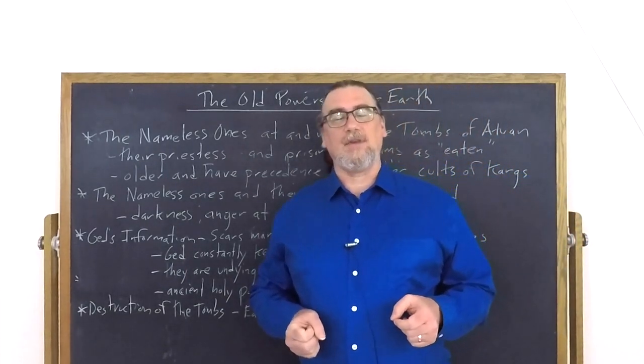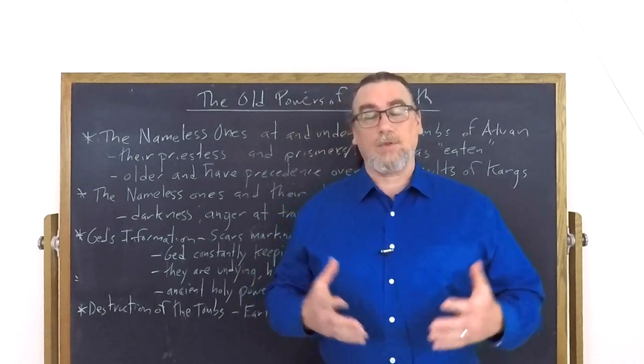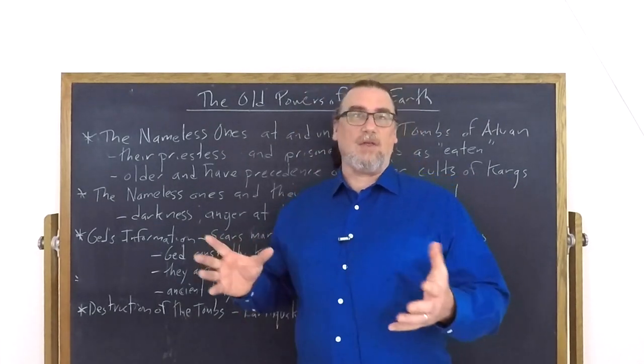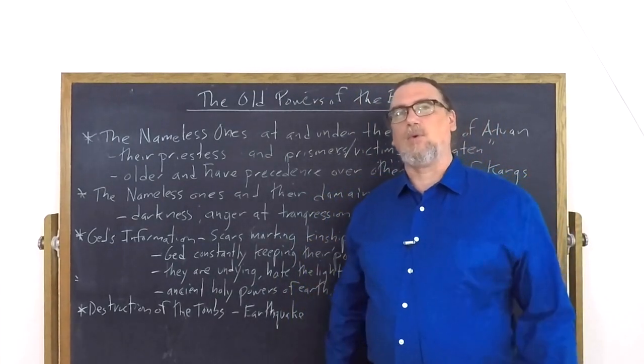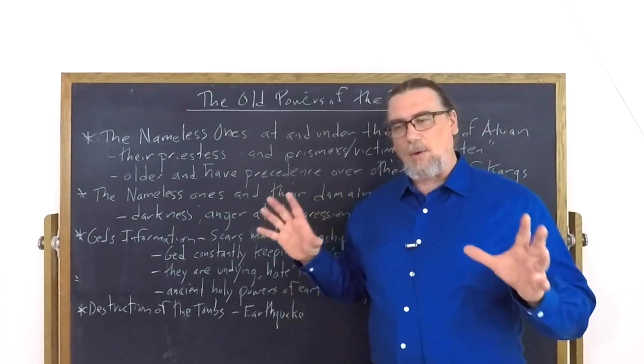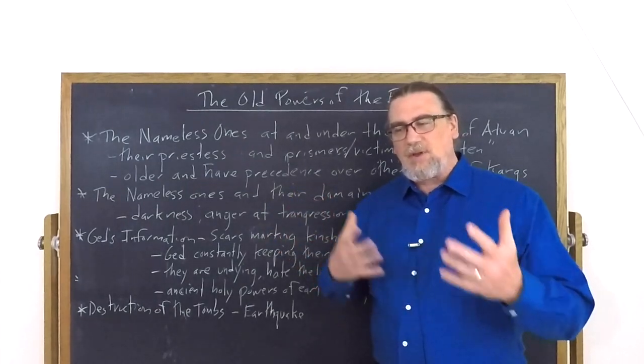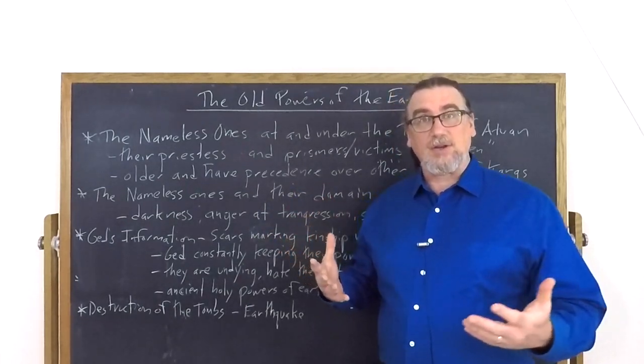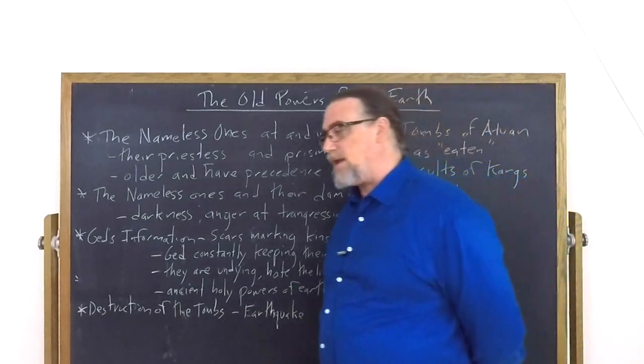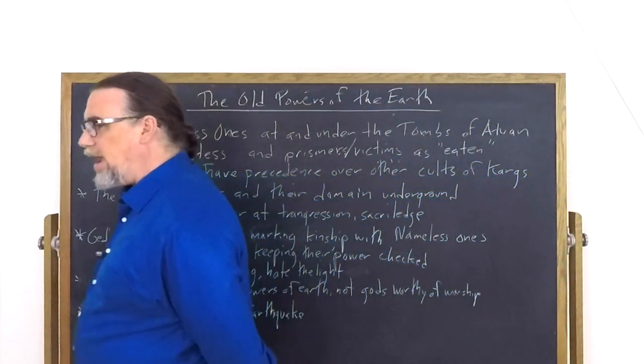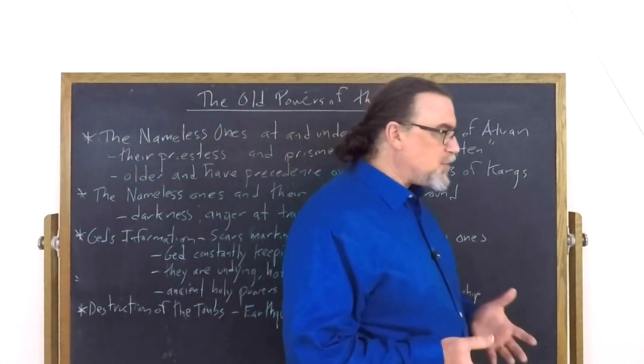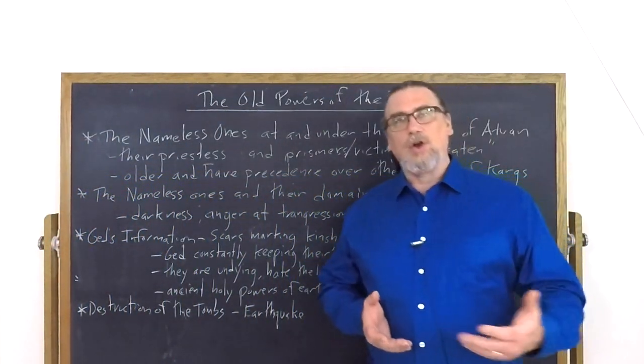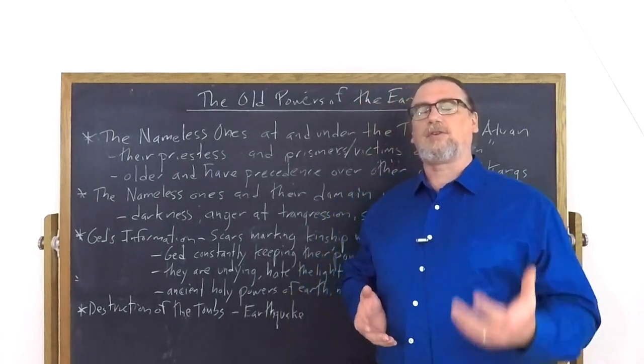That's going to come through Ged, one of the other major characters of the novel, telling her some important things that allow a picture to be filled in further. There's actually a lot of information being given about the Nameless Ones. We begin by learning about a ritual that the young girl goes through that sets her apart.